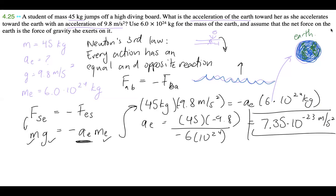So the acceleration of the earth toward her is 7.35 times 10 to the negative 23 meters per second squared. I hope that was helpful! If you have any questions, feel free to send me an email or leave a comment. I also started an Instagram account for this channel, so maybe I'll post there too. Thank you so much for watching — don't forget to like and subscribe, and see you next time!